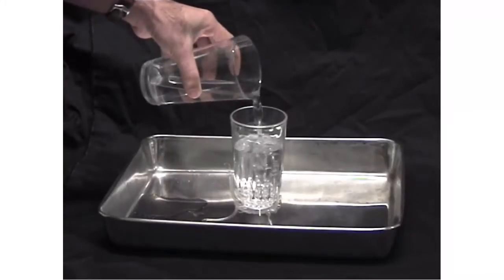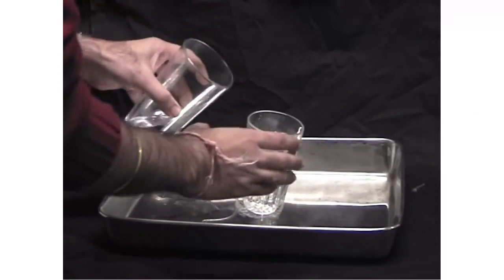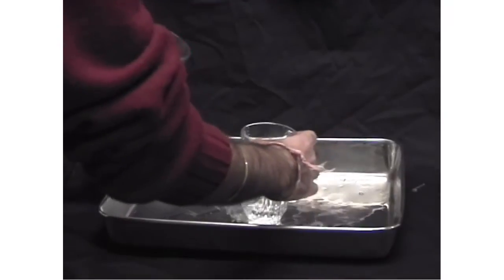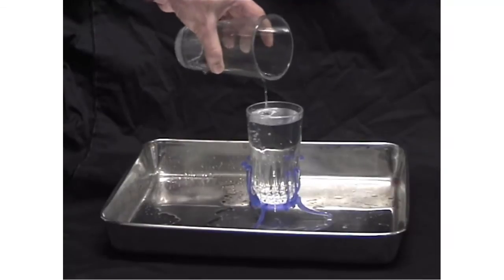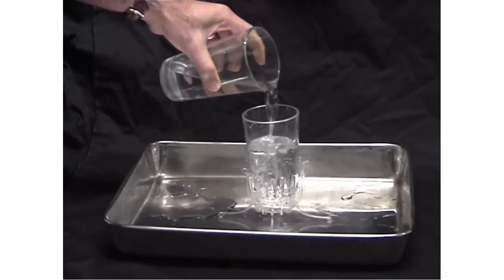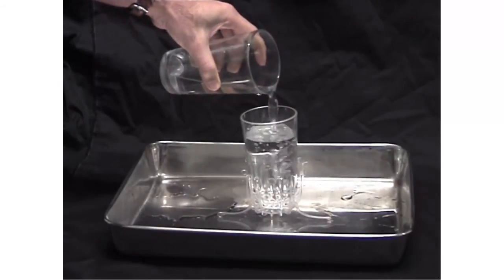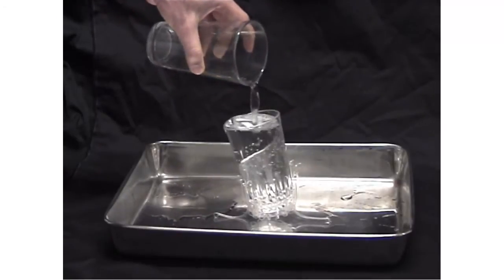We performed the water glass experiment shown here to determine if predictions were consistent with reality. We found that the weak 3 and 4 legged designs, shown with clear acrylic, fractured as predicted, and the stronger 3 and 4 legged designs, shown with blue acrylic, supported the weight of a full water glass.